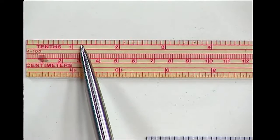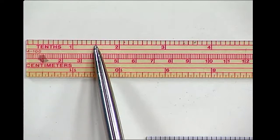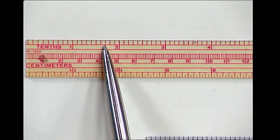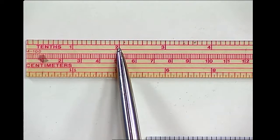This is one tenth, two tenths, three tenths, four tenths, five tenths. That would be a half inch. Six tenths, seven tenths, eight tenths, nine tenths, and that would be like two inches.